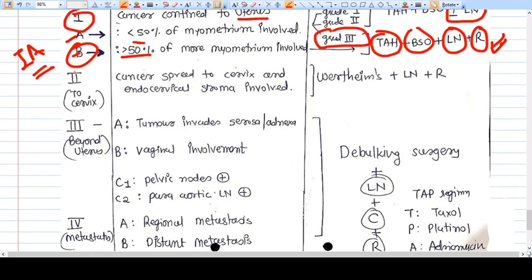Then comes stage 2. Stage 2 means spread to the cervix. Cancer spread to the cervix and endocervical stroma is involved. It's considered stage 2. In this thing, simple hysterectomy will not be sufficient.